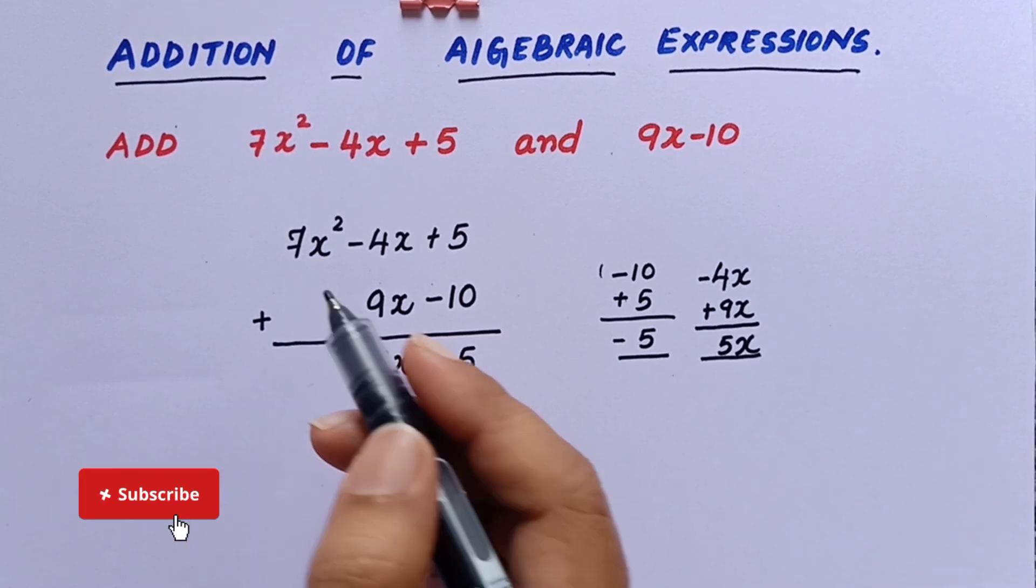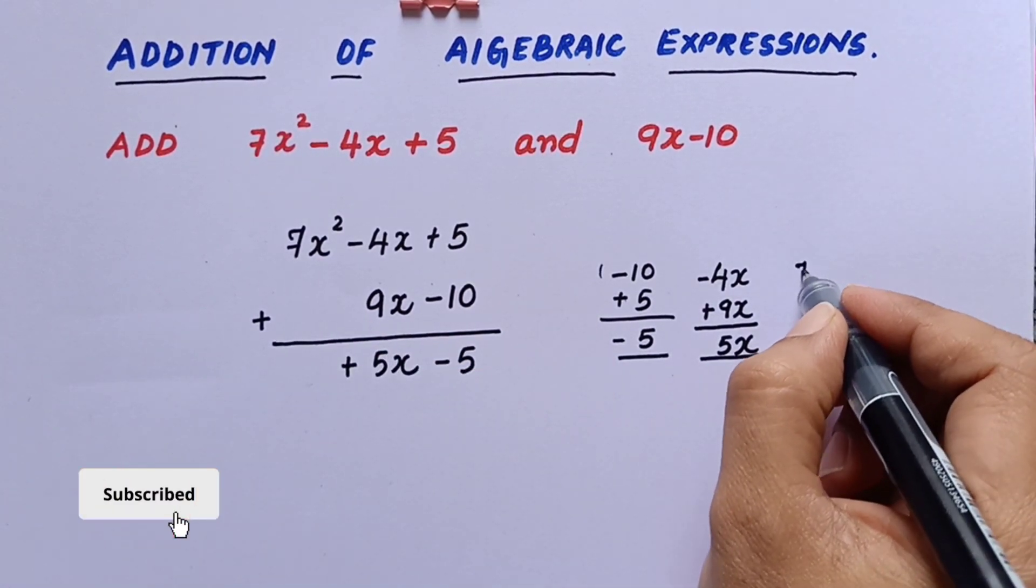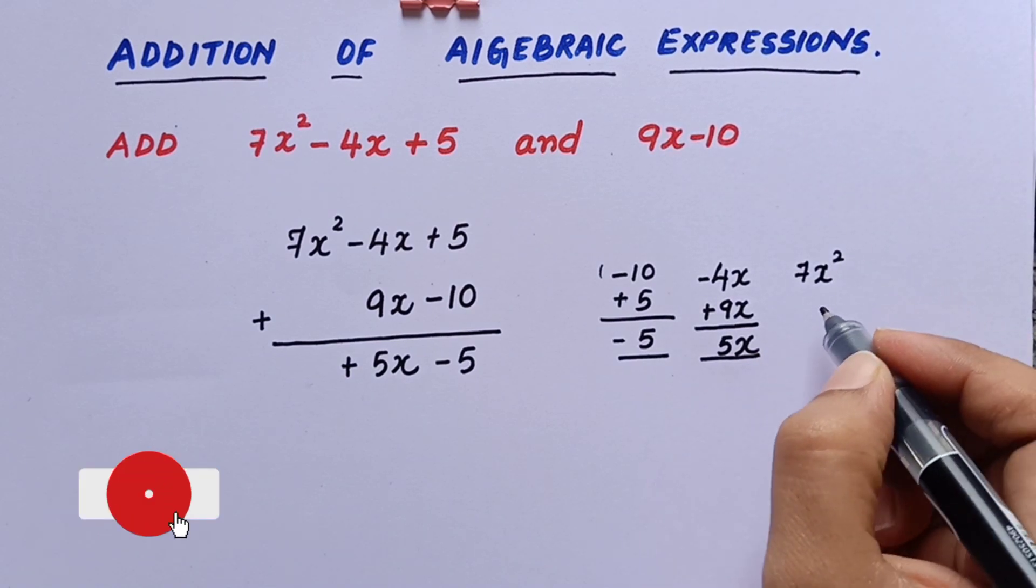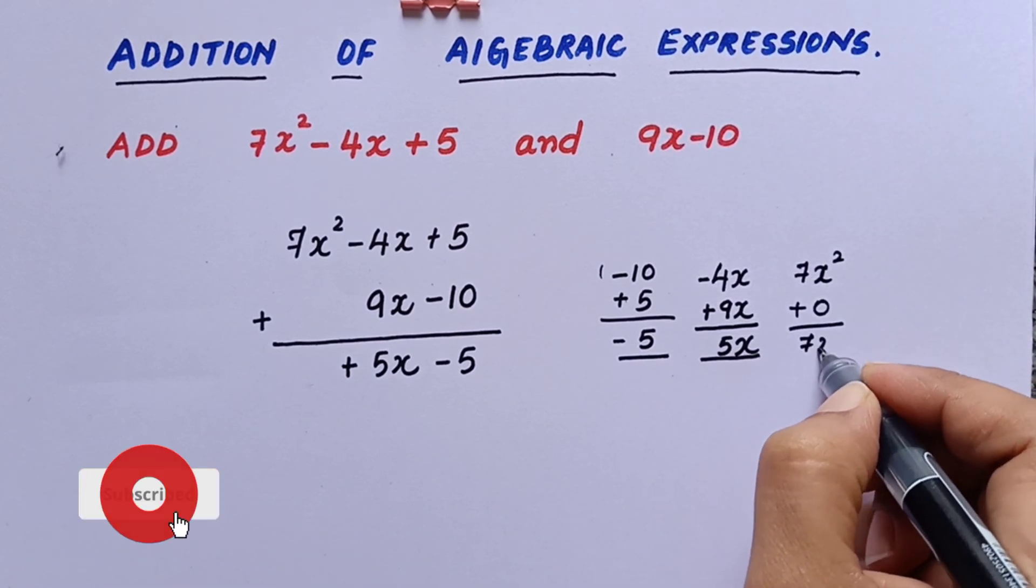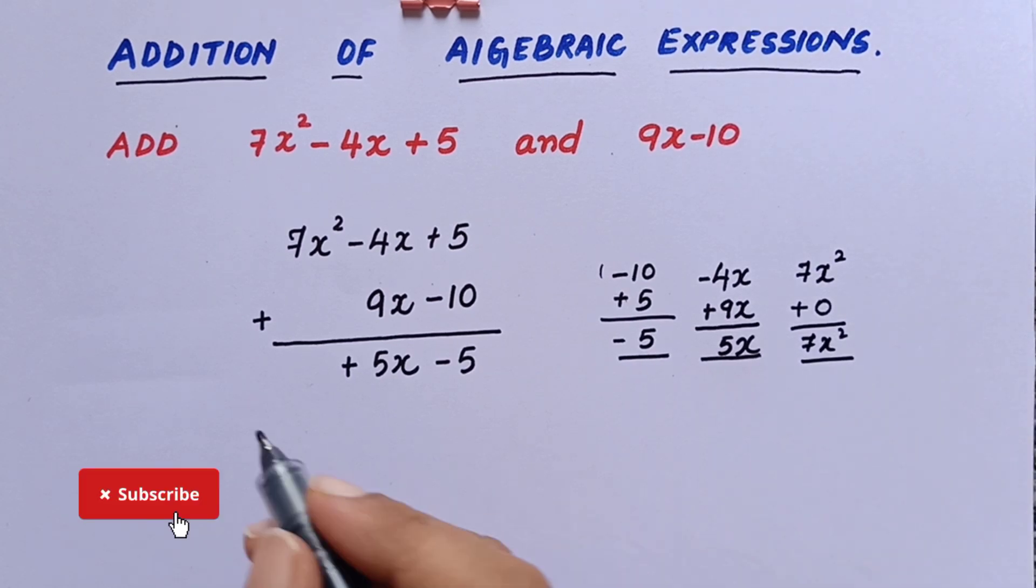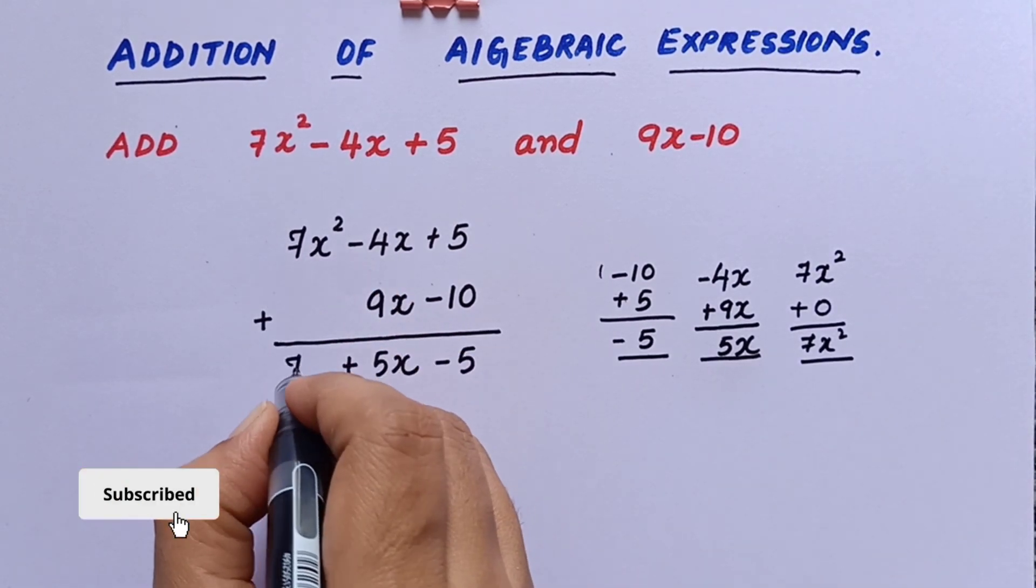And next comes 7x². So here 7x² is alone, we don't have any term with x². So 7x² + 0 is 7x² itself. So we'll write the same thing here, 7x².